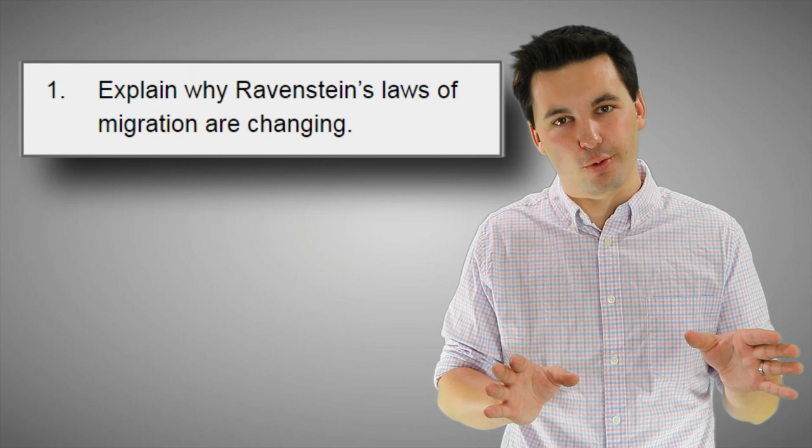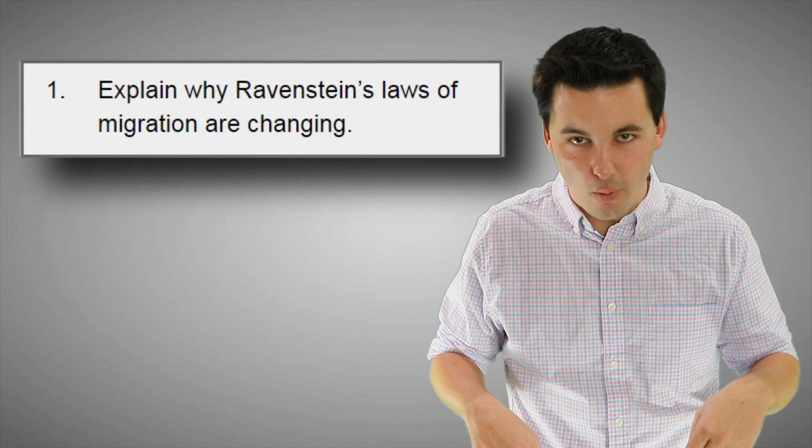As women continue to gain more rights and opportunities in society, it's only a matter of time until Ravenstein's laws continue to shift again — we'll have to wait and see. Just like that, we're done with 2.8. Answer the questions on the screen right now and check your answers below. If you're struggling with AP Human Geography and need more help, check out my Ultimate Review Packet — it'll help you get an A in your class and a 5 on that national exam.